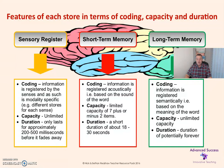Moving on to short-term memory: the coding of short-term memory is acoustic, in accordance with Baddeley 1966. The capacity is said to be limited to seven plus or minus two items — that's Miller's magic number. The duration is short, between 18 to 30 seconds, as per research carried out by Peterson and Peterson in 1959.